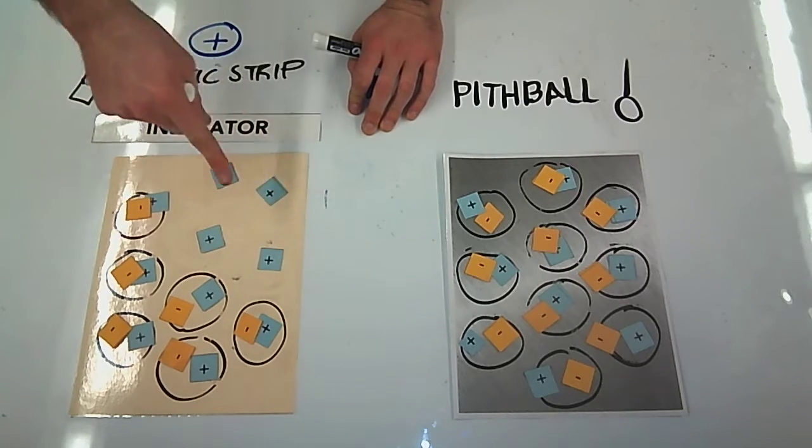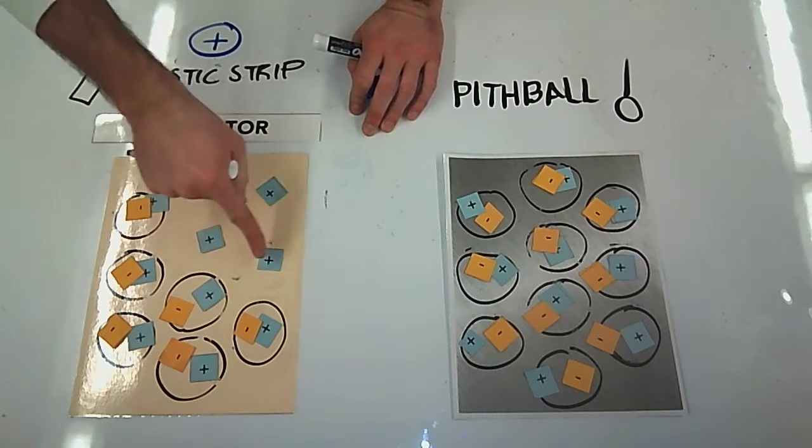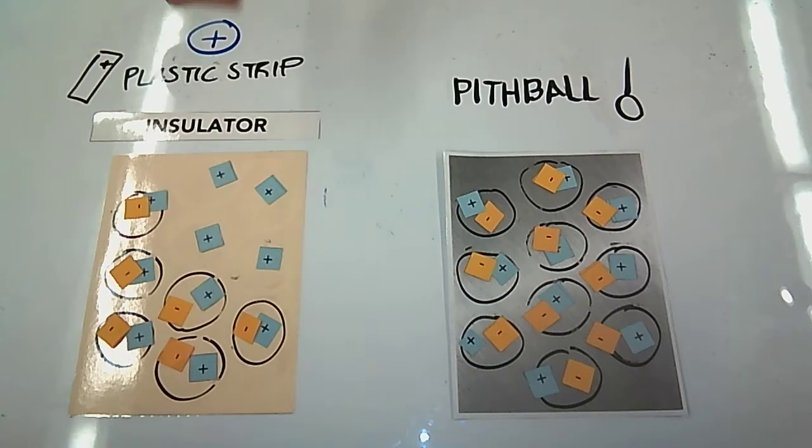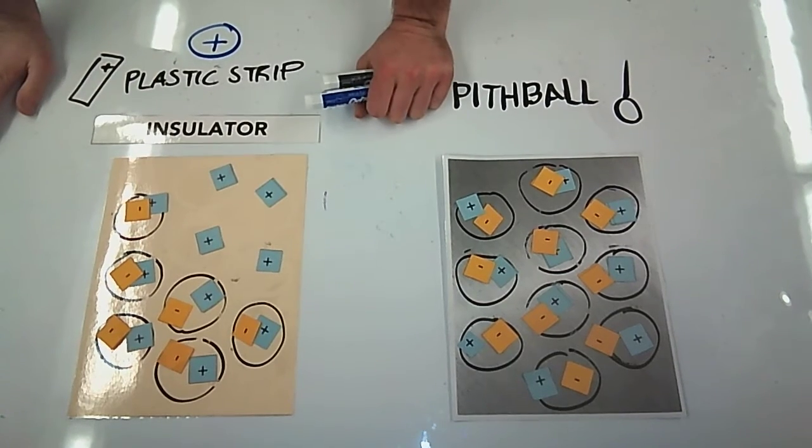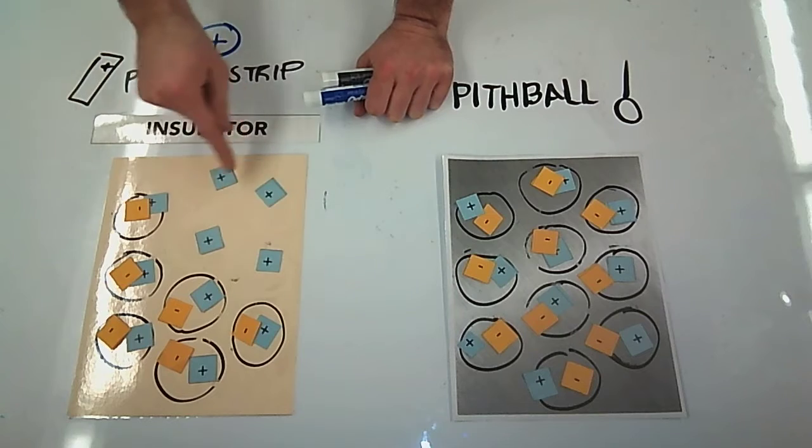It has a charge specifically of positive four, which means that these four protons in my model don't have an electron paired with them. And since it's an insulator, the charge is localized in one spot right here.